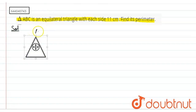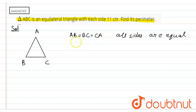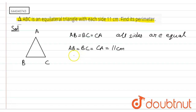Here is equilateral triangle ABC. In an equilateral triangle, AB is equal to BC is equal to CA — all sides are equal in length. So it means AB is equal to BC is equal to CA, all equal to 11 centimeters. Now in order to find the perimeter, we have to add AB plus BC plus CA.